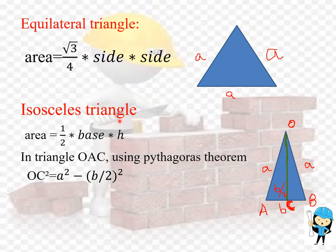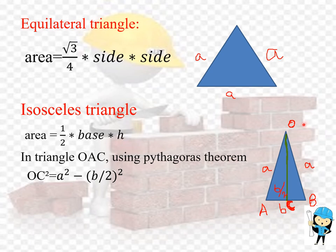Now we are going to see about the isosceles triangle. In an isosceles triangle, two sides are equal. The formula to calculate the isosceles triangle area is: half into base into height. Since the height is unknown, we divide the triangle into two equal halves — OAC and OCB. Using the Pythagorean theorem on triangle OAC, we get: OA squared equals AC squared plus OC squared, so OC squared equals A squared minus (B divided by 2) squared. This gives us the height OC.